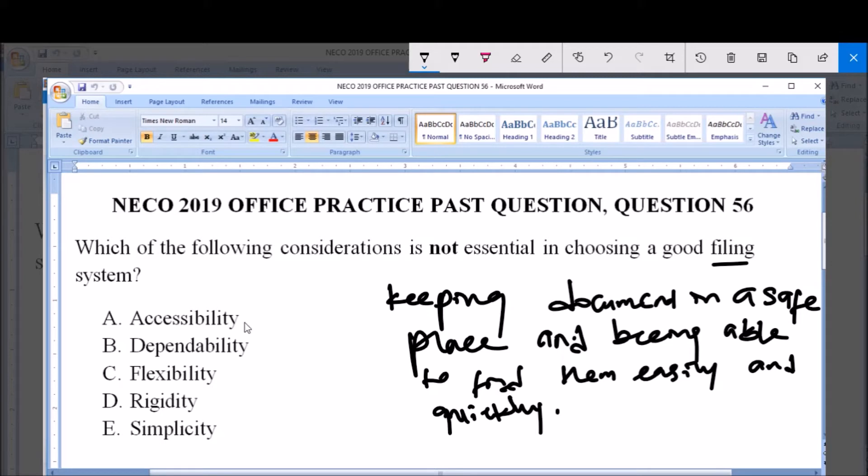A. Accessibility. For you to choose a good filing system, you must ensure that this filing system is easily accessible, that the files will be easily accessible.